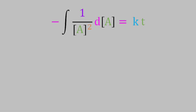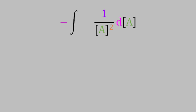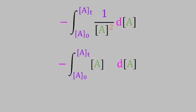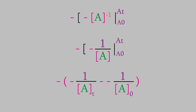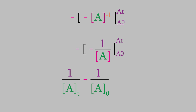Now let's solve the integral on the left side. The limits are the initial concentration A-zero and the ending concentration A-t. I'll rewrite the fraction as the concentration of A raised to the power of minus two. The solution to that integral is negative A to the minus one, which we can rewrite as negative one over A. Don't forget, we also had a negative sign in front of the whole integral. So when we apply the limits, we have the negative of negative one over A-t minus one over A-zero. Canceling the doubled negatives gives us one over A-t minus one over A-zero equals kt.